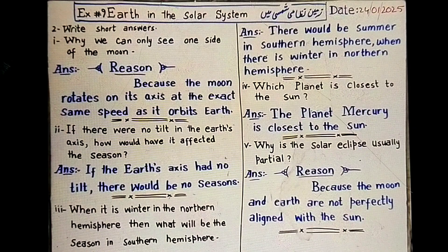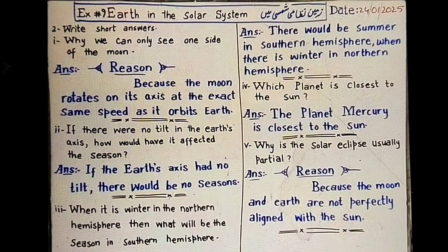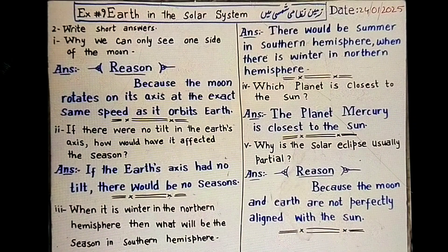The reason is because the moon and Earth are not perfectly aligned with the sun, so the solar eclipse is usually partial rather than total.